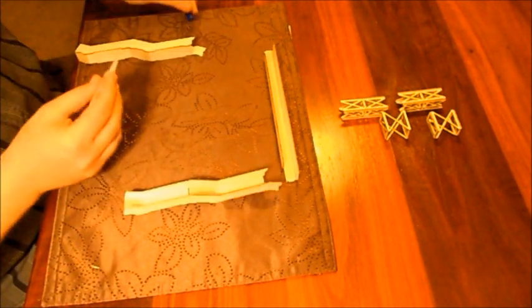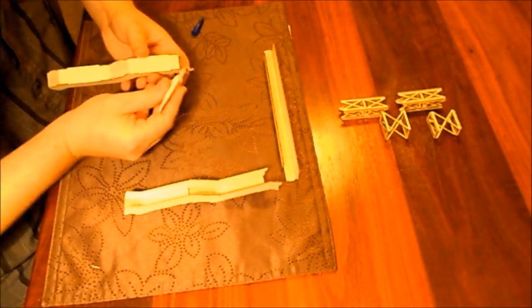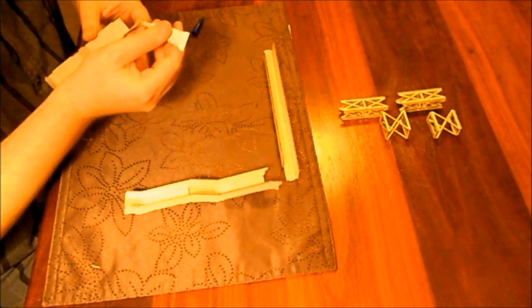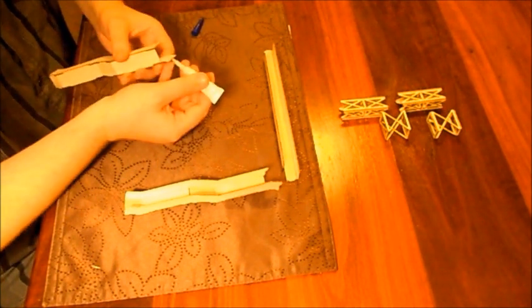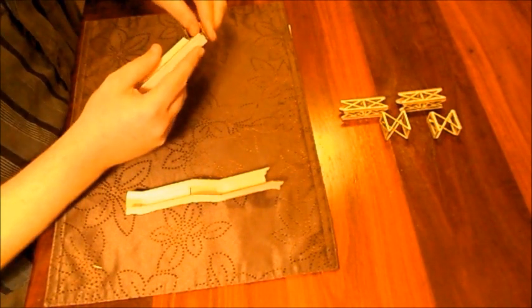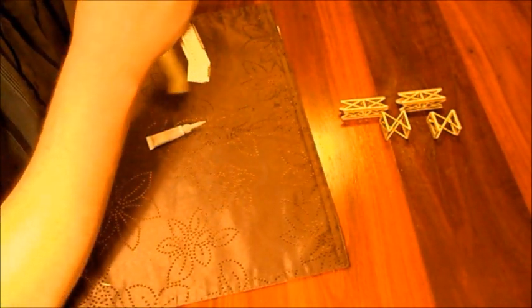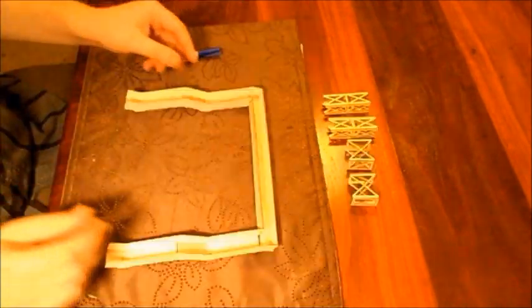Once that's complete, it's time to glue the walkway ramps to the overpass walkway. Just put a thin bead of glue along the edge and bring the pieces gently together. Repeat for the second walkway and hold the pieces together in the desired position.